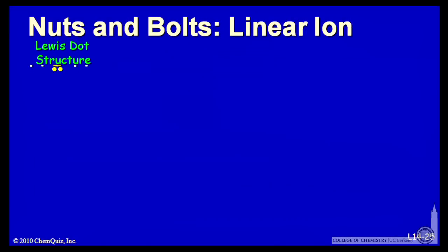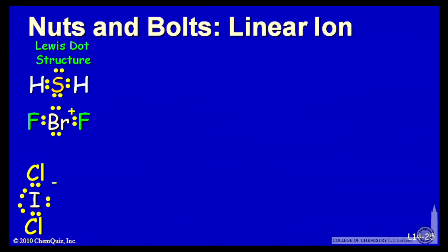So let's do that. Here is the Lewis dot structure for those three: H2S, BrF2, and ICl2 minus.